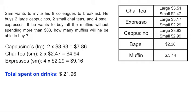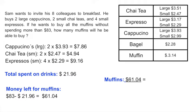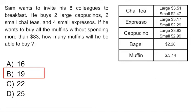The next step is to see how much money he has left. You would subtract that value from the $83 that he had, which gives you $61.04. Now you have to find out how many muffins you can buy with that amount. You divide that quantity by the price of one muffin which is $3.14. That gives you 19 muffins. So your answer would be B.